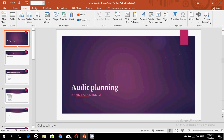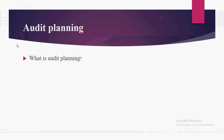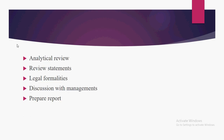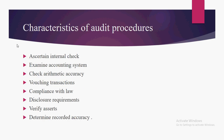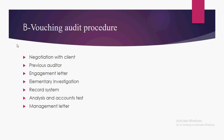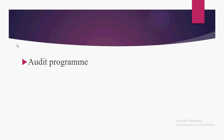Welcome back to the online mode of learning. This class is for MPA. We were discussing chapter number eight and in this chapter we had discussed audit planning, the commencement or starting of a new audit. We discussed audit procedures, some characteristics of audit procedures, and we discussed the kinds of audit procedures: the system audit procedure and the vouching audit procedure, along with the characteristics of these kinds.